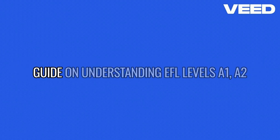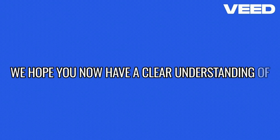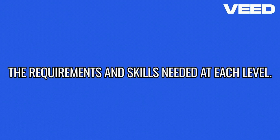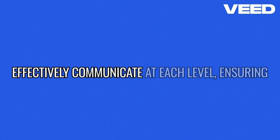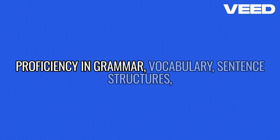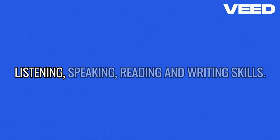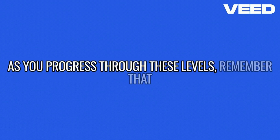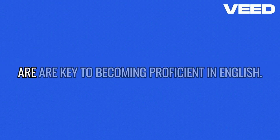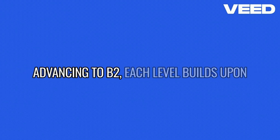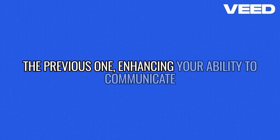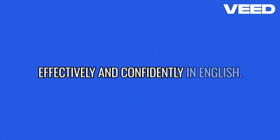Thank you for joining us in this comprehensive guide on understanding EFL levels: A1, A2, B1, and B2. We hope you now have a clear understanding of the requirements and skills needed at each level. Mastering these requirements prepares you to effectively communicate at each level, ensuring proficiency in grammar, vocabulary, sentence structures, listening, speaking, reading, and writing skills. As you progress through these levels, remember that consistent practice and application of what you've learned are key to becoming proficient in English. Whether you're just starting at A1 or advancing to B2, each level builds upon the previous one, enhancing your ability to communicate effectively and confidently in English.